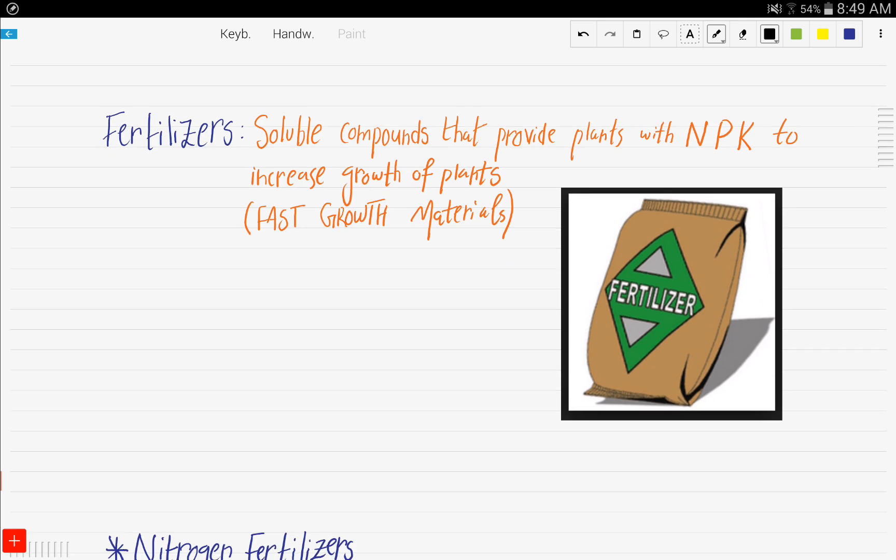Alright, so before we get into the different types of fertilizers, let's understand what is meant by the term fertilizers. These are soluble compounds that provide plants with either nitrogen, phosphorus, or potassium. So this stands for nitrogen, this stands for phosphorus,